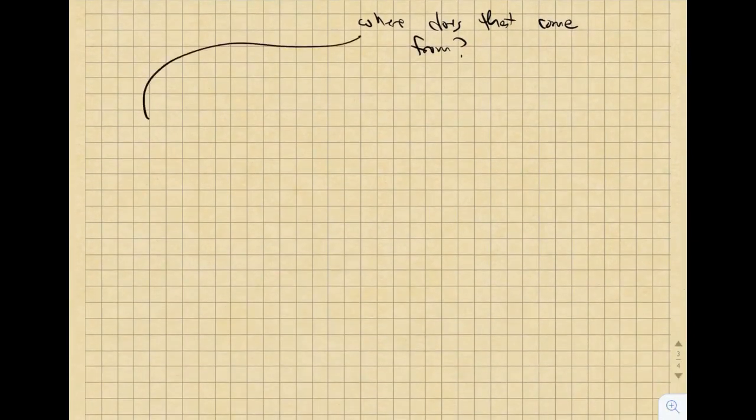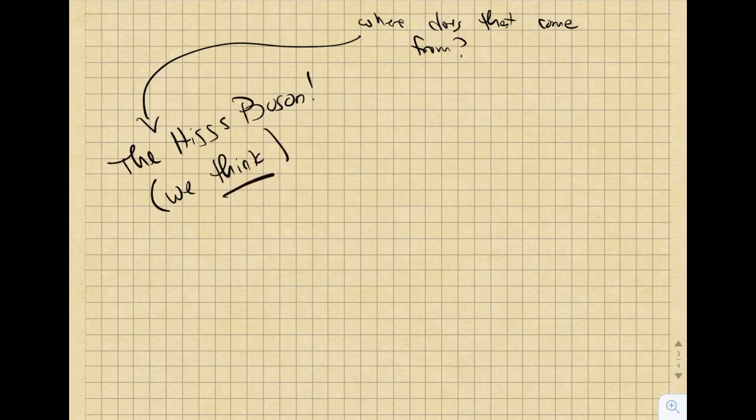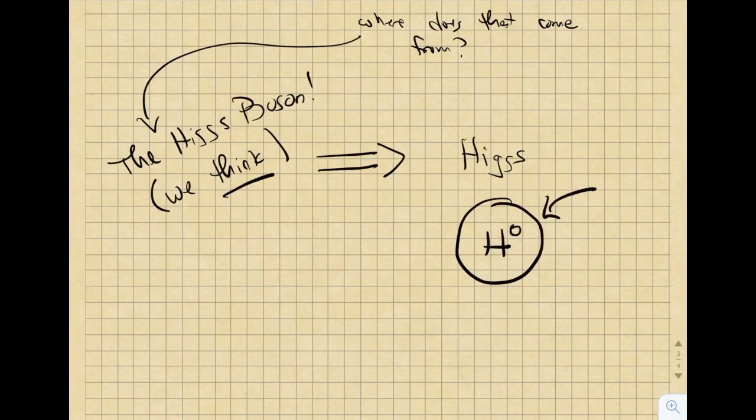Well, in modern particle physics, we think that one answer to this question is the Higgs boson, or the Higgs particle. This is a special particle that was discovered in 2012, 2013. And we think that it's responsible for the masses of things like bottom quarks, and up quarks, and electrons, and so forth. Now, the Higgs itself is very heavy, about 125 times the mass of the proton. And because of the laws of physics, that means it doesn't stick around very long when it's made.